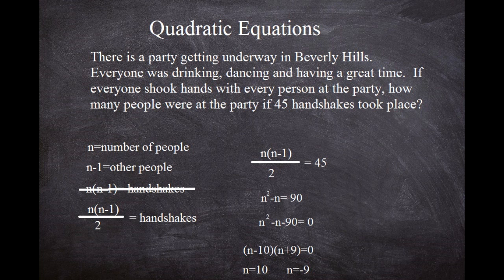But that's not the final answer, because in quadratic equations you have to look at what the question is actually asking. Does it make sense that negative 9 people would be at a party? No, it doesn't. The only valid value here is 10. If you have 10 people at a party, they will do exactly 45 handshakes.